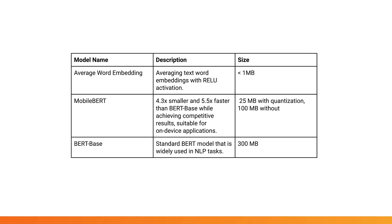Looking at the Model Maker documentation, you can find three text-based models. The key thing to note here is that all of the model architectures shown essentially do the same job — it's just that some are more accurate or versatile than others. In fact, all of these can be used for comment spam detection.